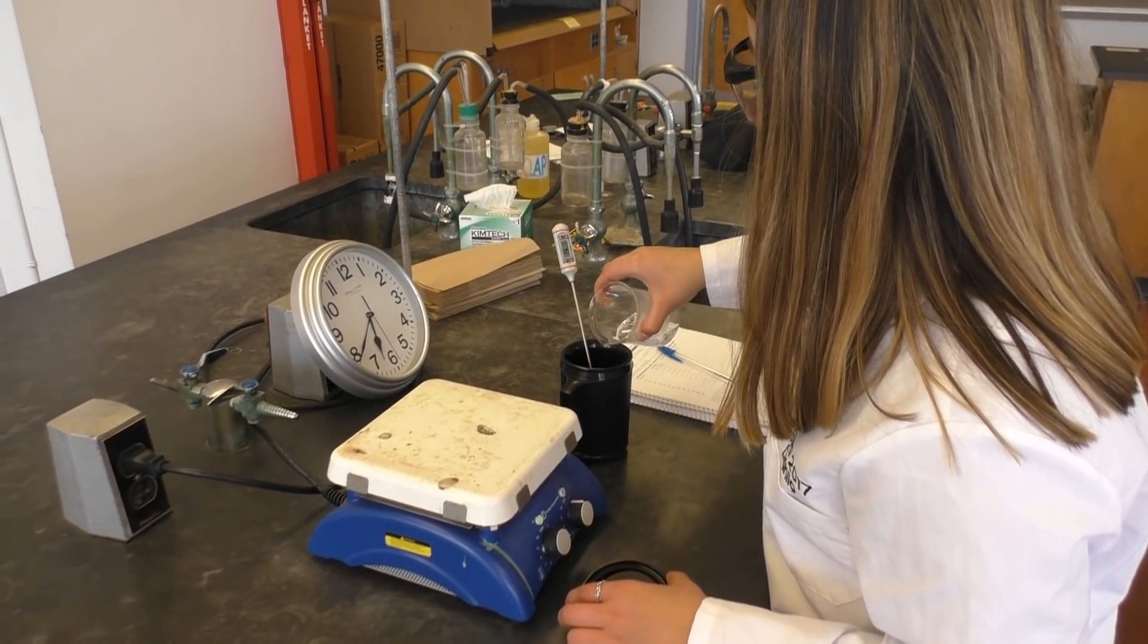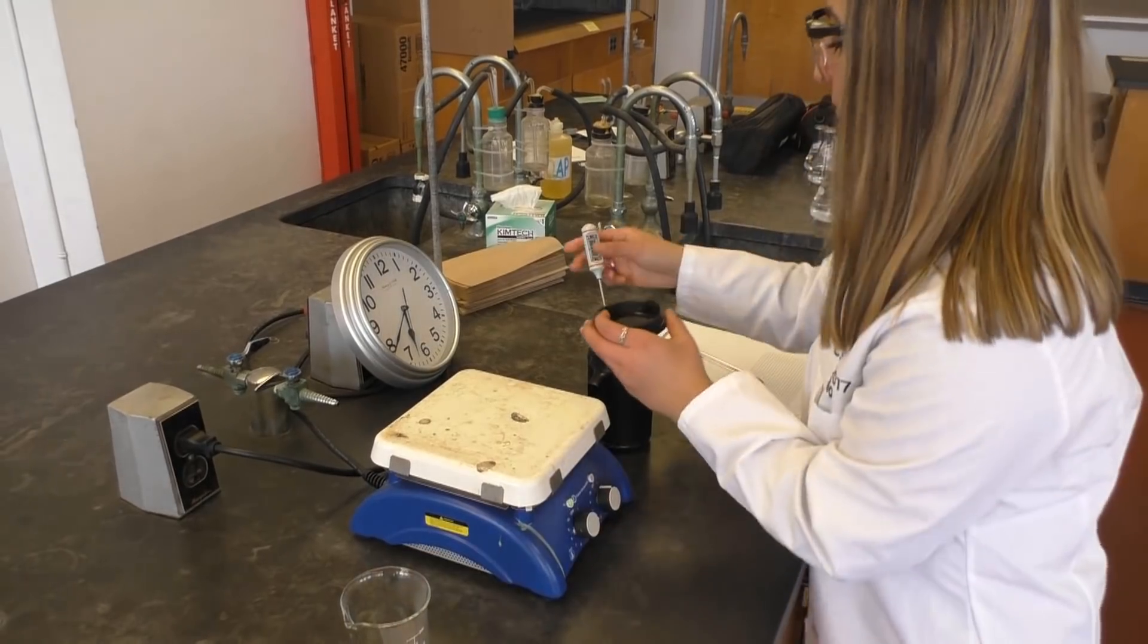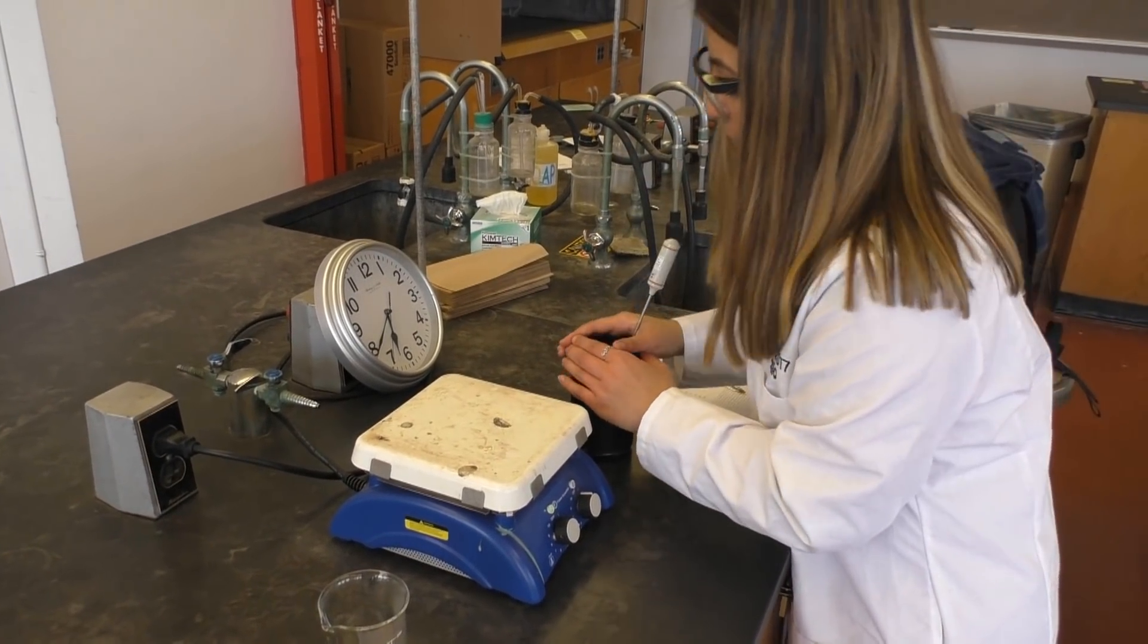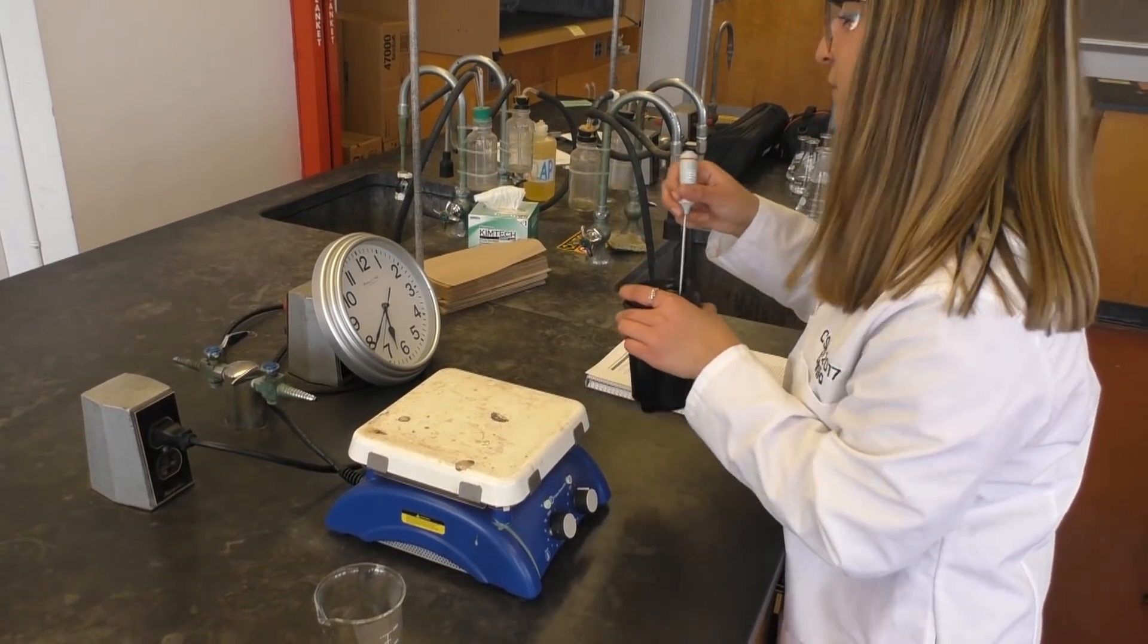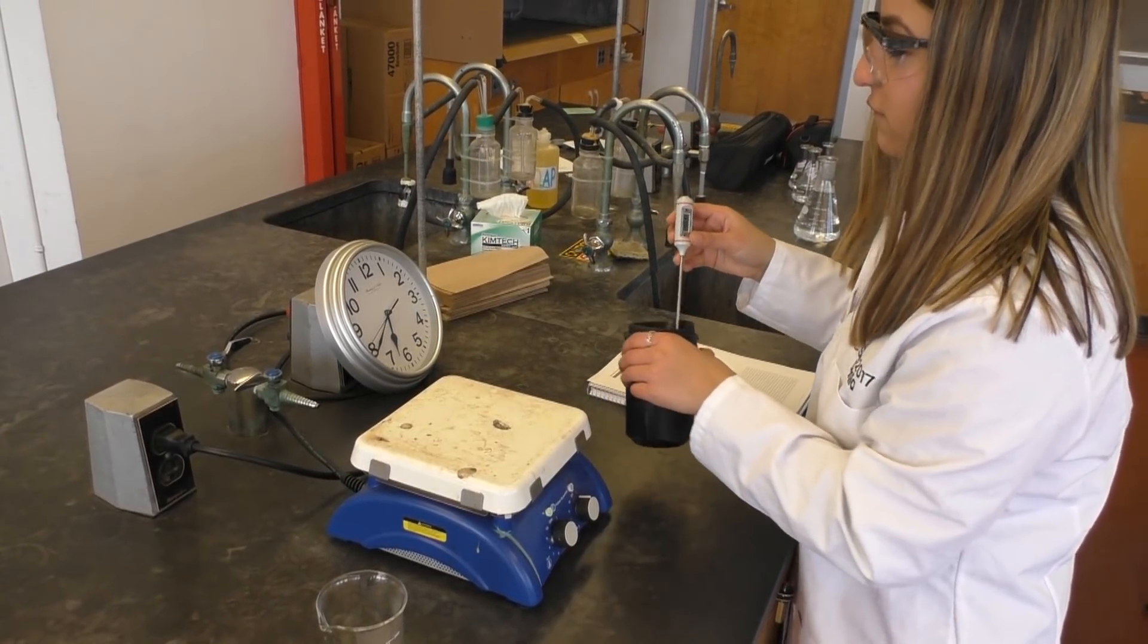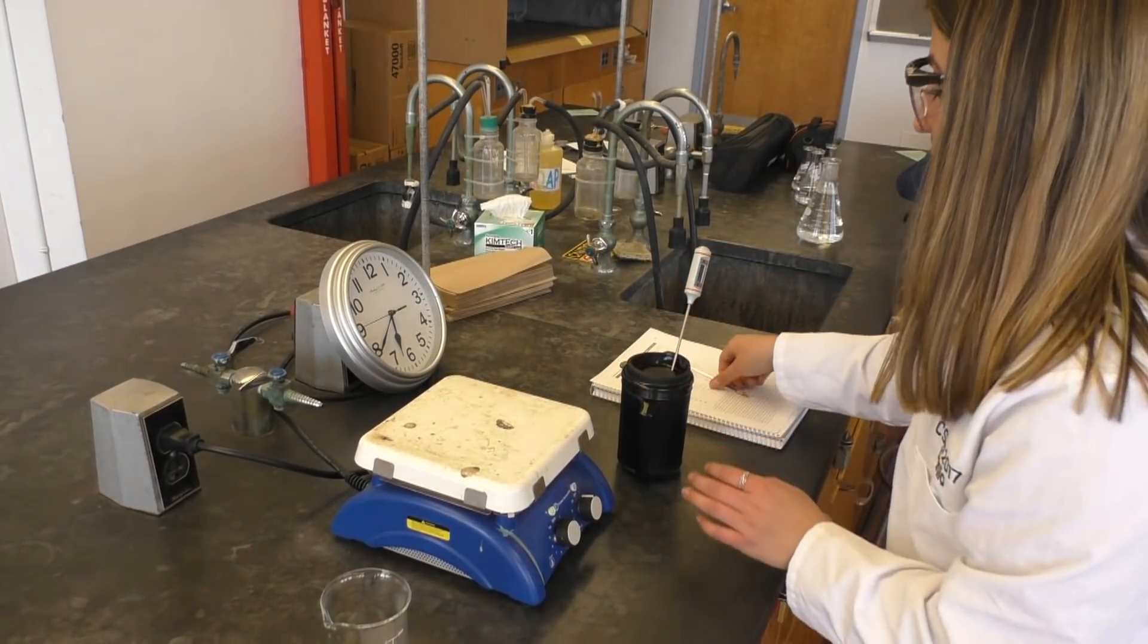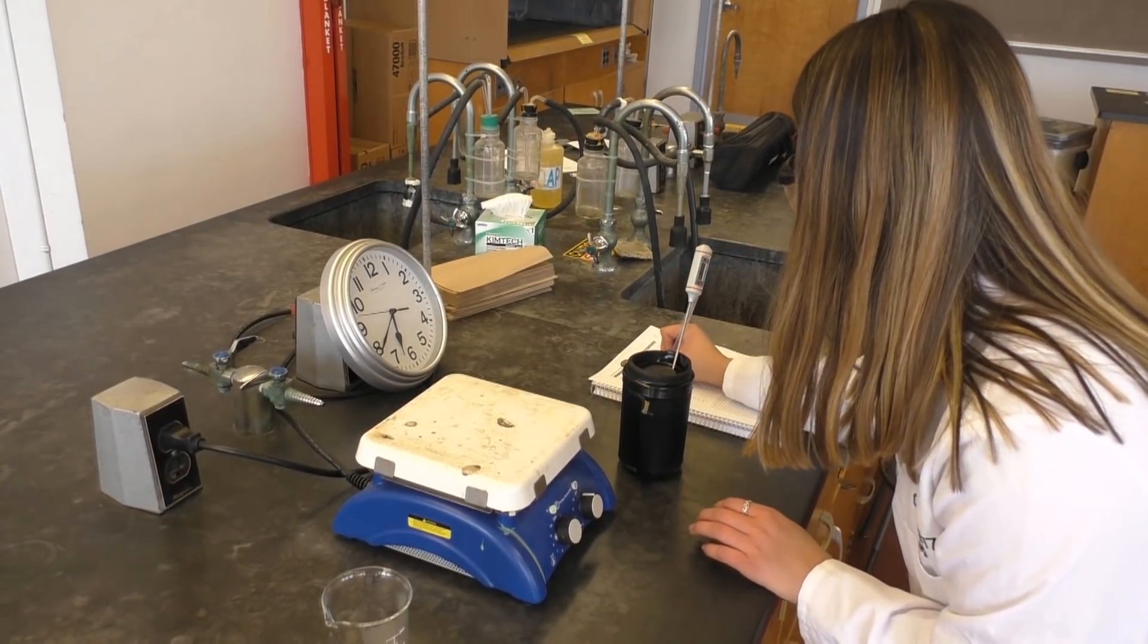Finally add the hot water all at once to your calorimeter. Cover it. Swirl it to mix the samples. Then record the temperature every 15 seconds for 3 minutes.